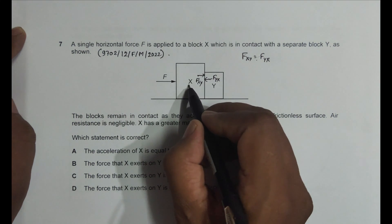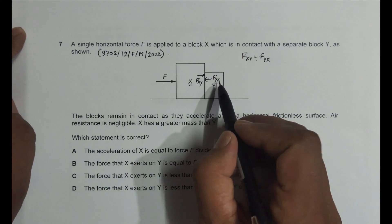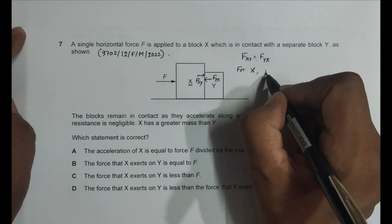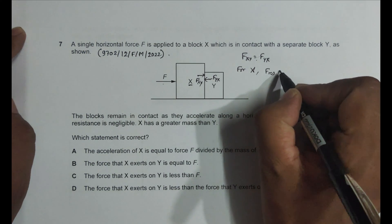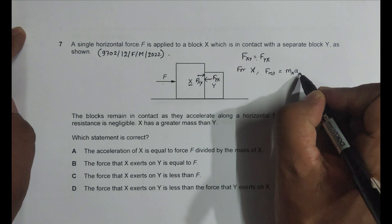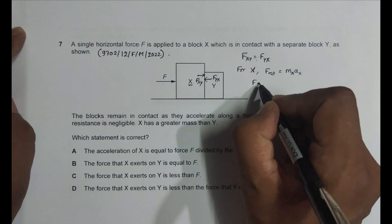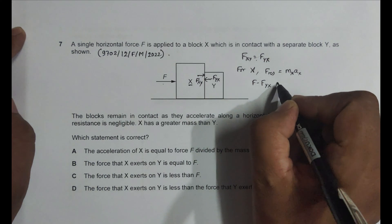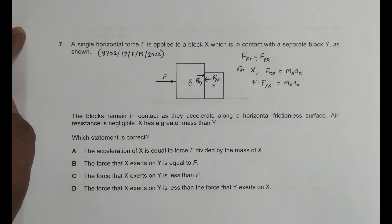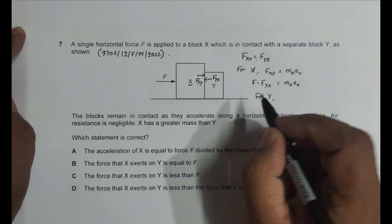For body X, there are two forces acting: the applied force F and the reaction force F_YX. Applying Newton's 2nd law to body X: F - F_YX = M_X × a. So the net force on X is F minus F_YX, giving it acceleration a.